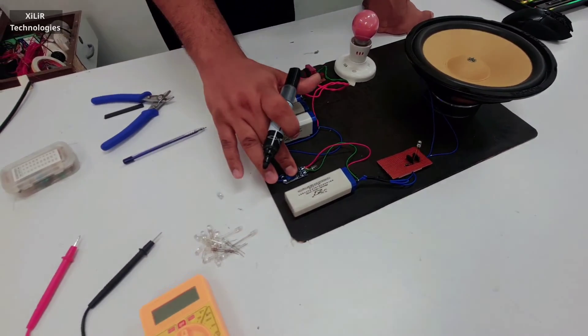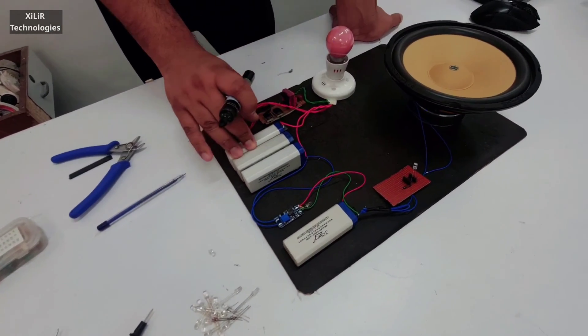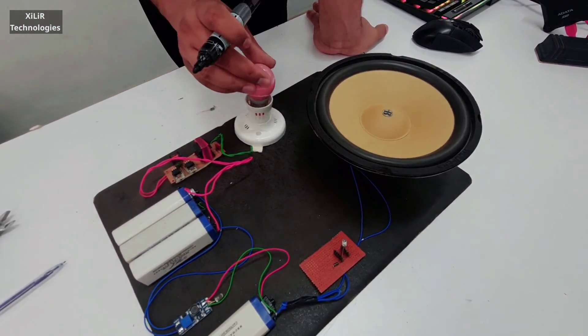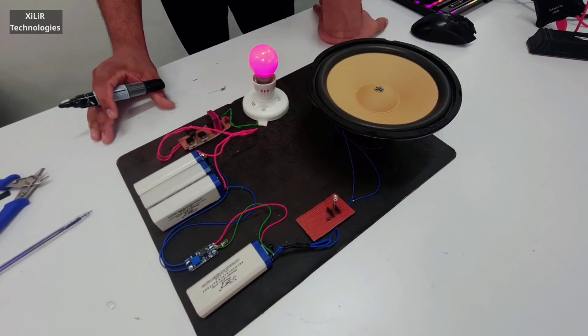This can go up to like 27 volt also, and after that we are using one inverter circuit to blow this 220 volt supply.